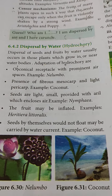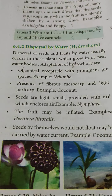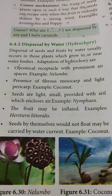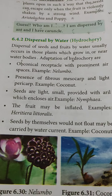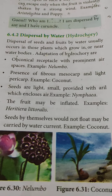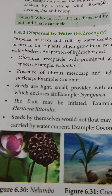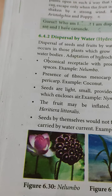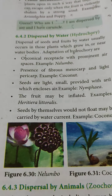Another hydrochory adaptation is the presence of fibrous mesocarp and light pericarp — as seen in coconut. Seeds may also be small and light, provided with an aril which encloses air, as seen in Nymphaea. The seeds are embedded in a spongy thalamus, which helps them float.